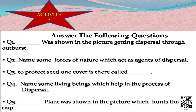Next question: to protect a seed, one cover is there — it is called dash. The next question: name some living beings which help in the process of dispersal. And the last one: this plant was shown in the picture which hunts through a trap. All these questions are so interesting and easy. I know all of you would have already solved them, but let us check whether you are right or wrong.